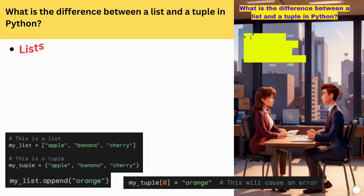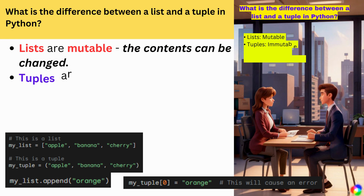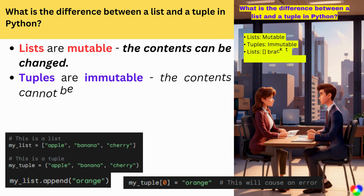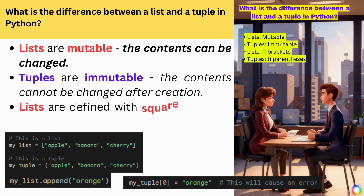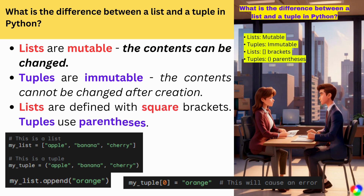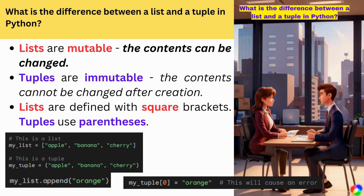What is the difference between a list and a tuple in Python? Lists are mutable — the contents can be changed. Tuples are immutable — the contents cannot be changed after creation. Lists are defined with square brackets; tuples use parentheses.